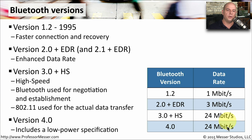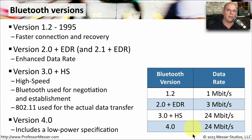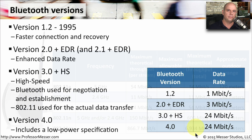Version 4.0 of Bluetooth has speeds similar to 3.0, with about 24 megabits of throughput. One nice addition in version 4.0 is a new low power specification, so we can use our mobile devices for even longer.